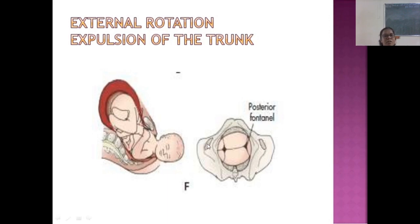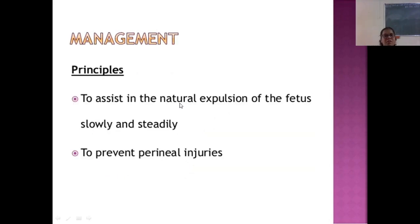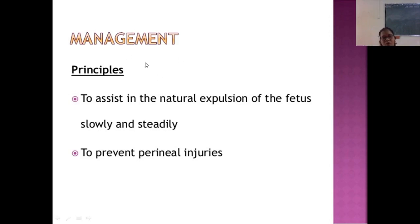External rotation of the head is followed by expulsion of the trunk. First the anterior shoulder will be delivered and then the posterior shoulder will be delivered. Coming to the management, we have now seen the mechanism of normal labor. We will look at the principles of management of the second stage of labor.